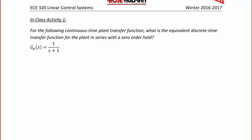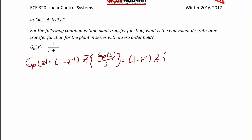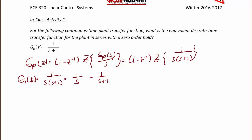In class activity 1, for the following continuous time plant transfer function, what is the equivalent discrete time transfer function for the plant in series with a zero-order hold? The plant GP(s) = 1/(s+1). So GP(z) equals (1 − z^(−1)) times the Z-transform of GP(s)/s, or (1 − z^(−1)) times the Z-transform of 1/(s(s+1)). Recall that we also call this GI(s), so GI(s) = 1/(s(s+1)) = 1/s − 1/(s+1). Therefore GI(t) = (1 − e^(−t)) · u(t).